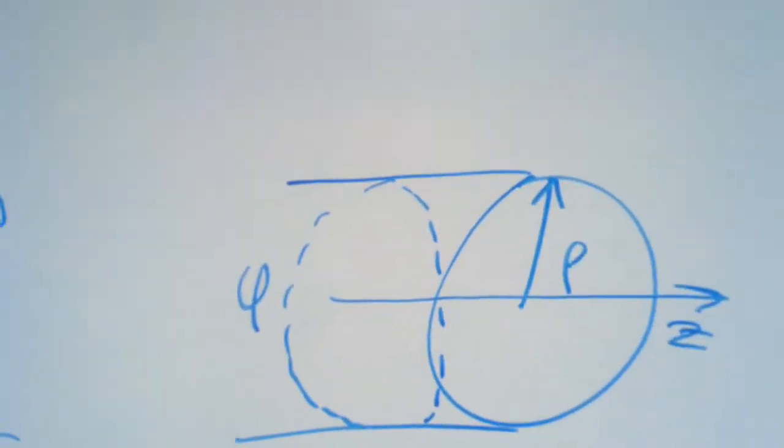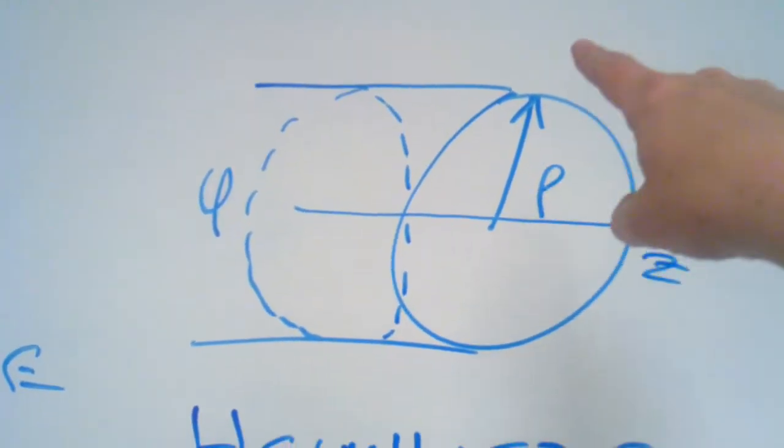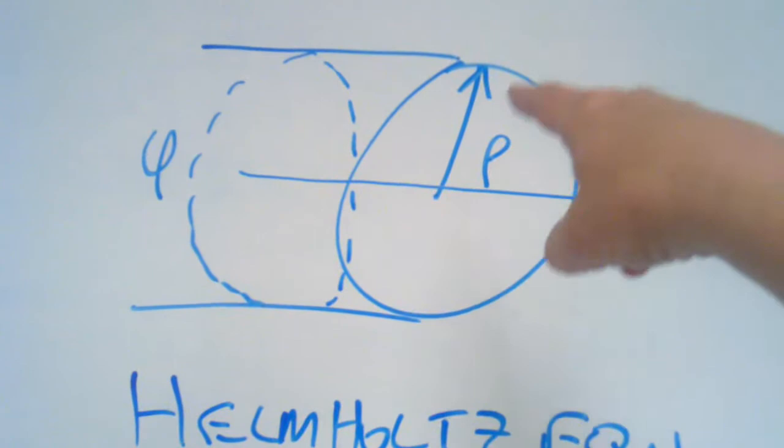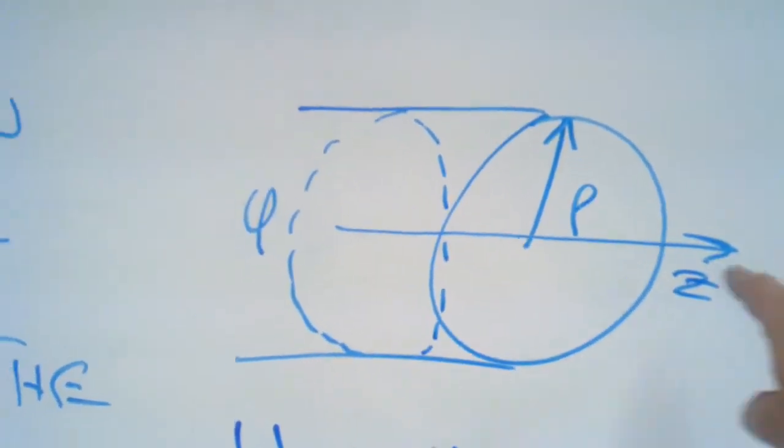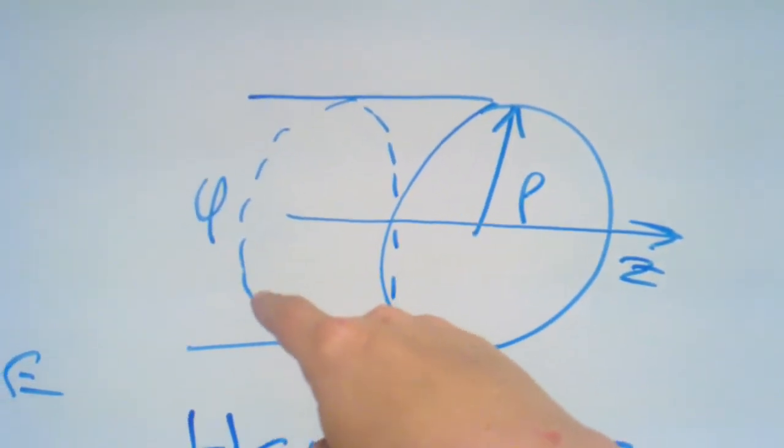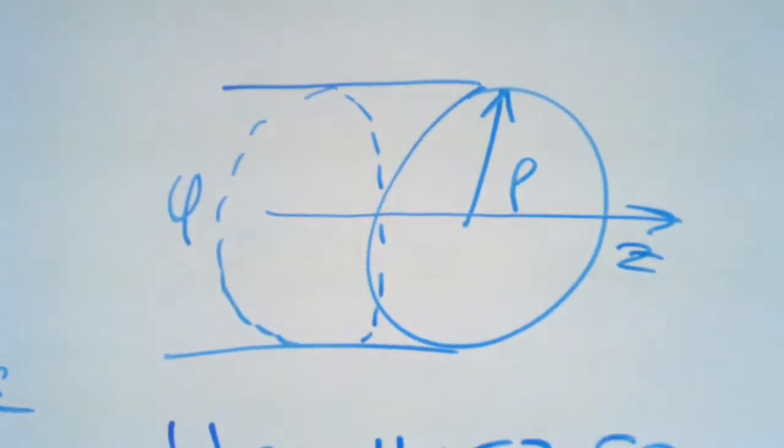We have a radial component, the radius of the core or clad if we go all the way out. Z is the direction along propagation, and phi is the azimuthal component, the angle that goes around.